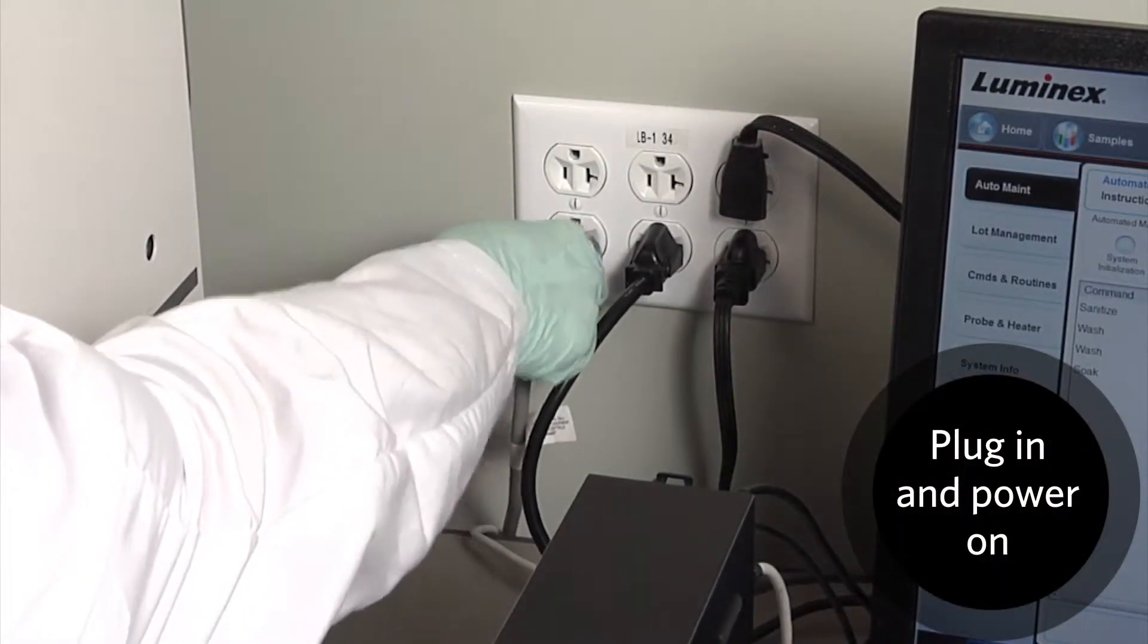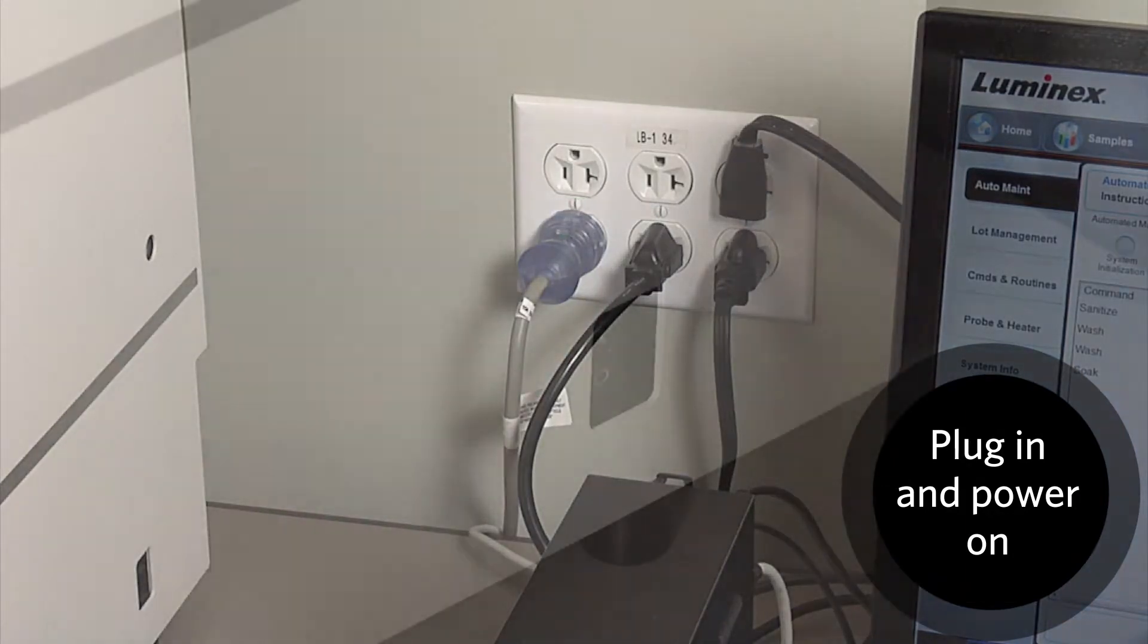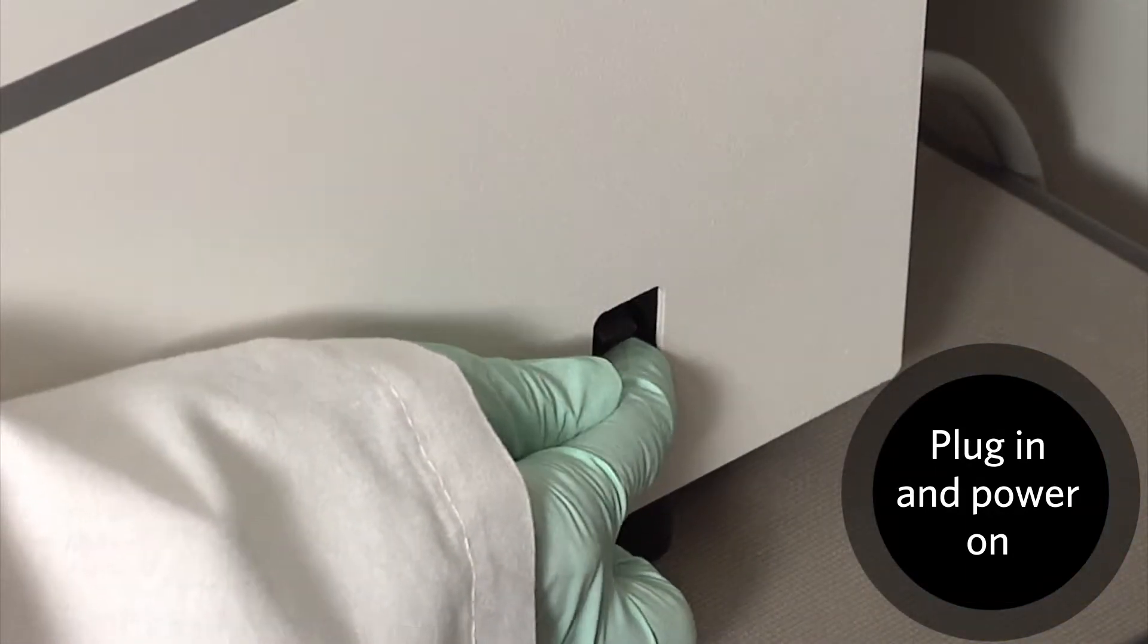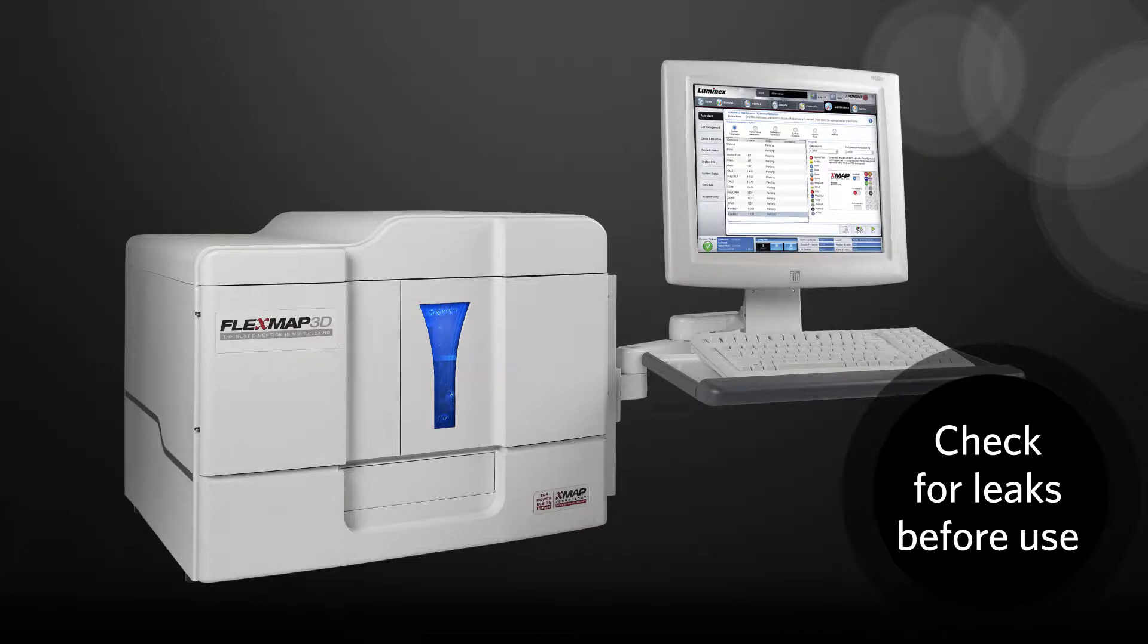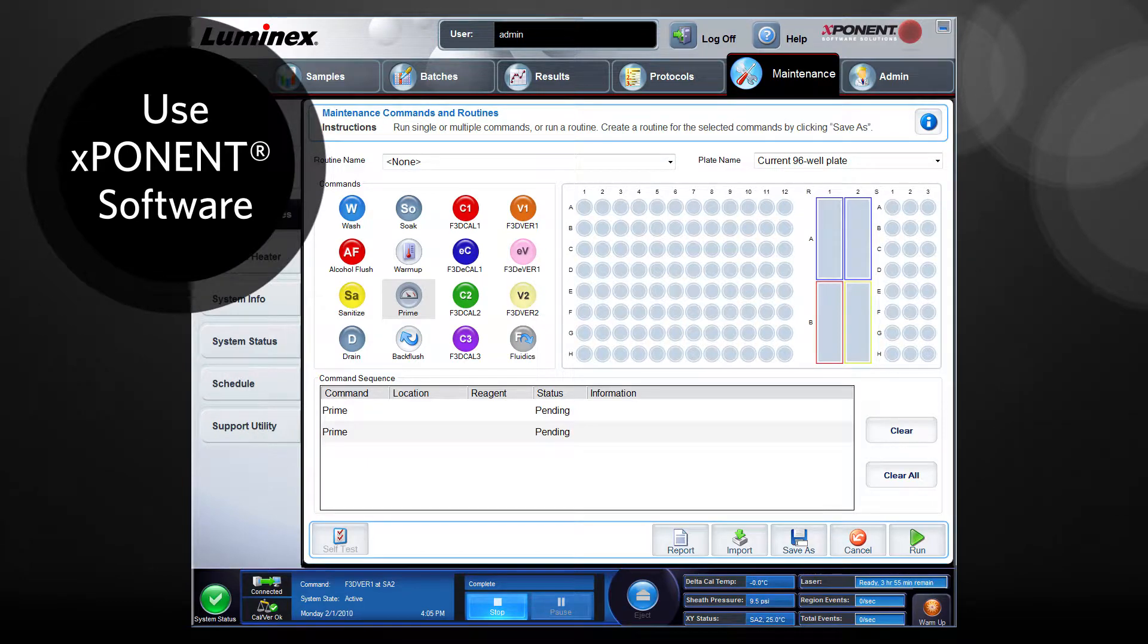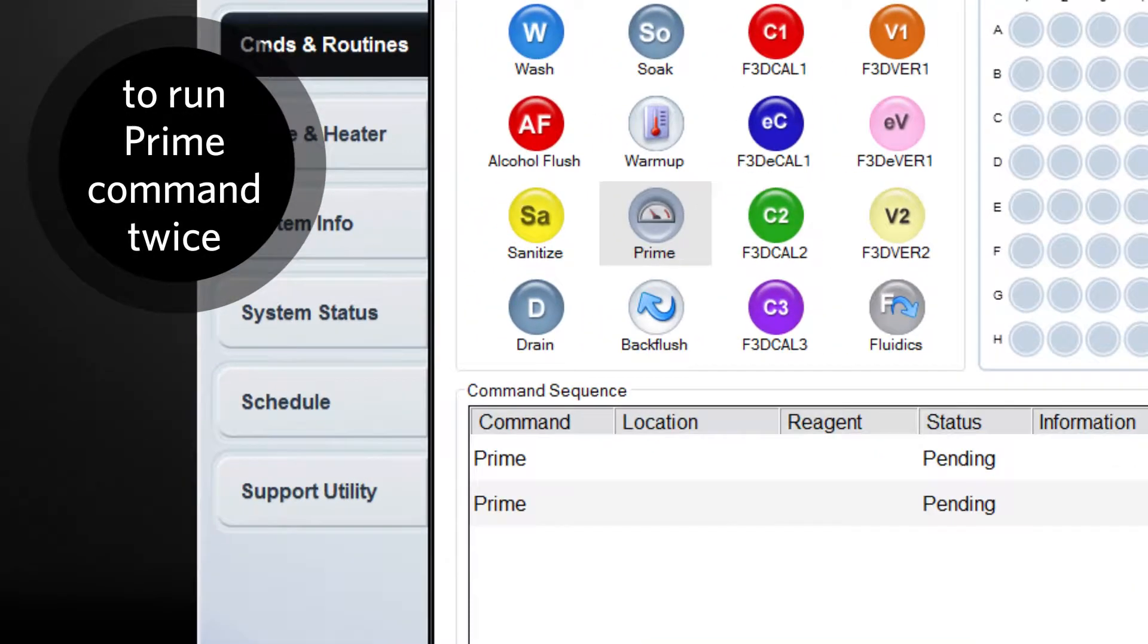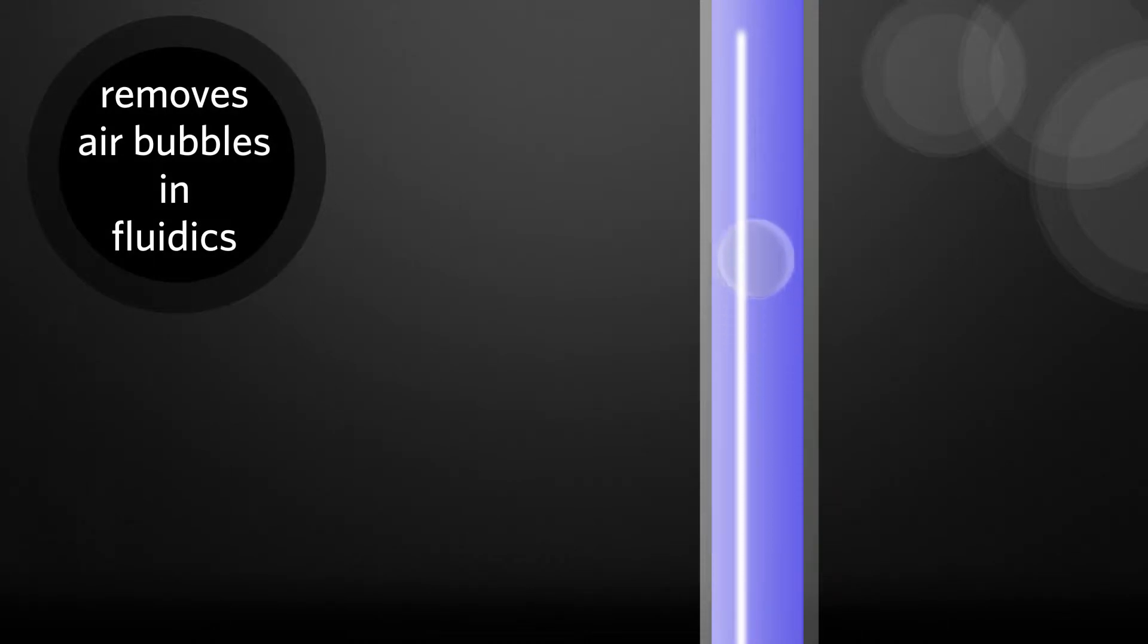The FlexMap 3D instrument can now be powered back on. Before using the instrument, the syringe seal needs to be checked for leaks. Using the exponent for FlexMap 3D software, run the prime command twice. This will remove any air bubbles in the fluidics lines.